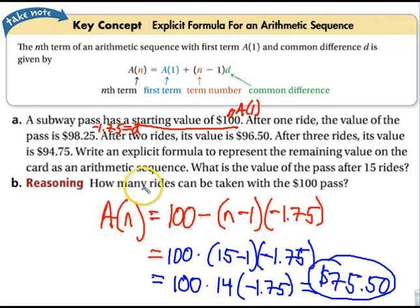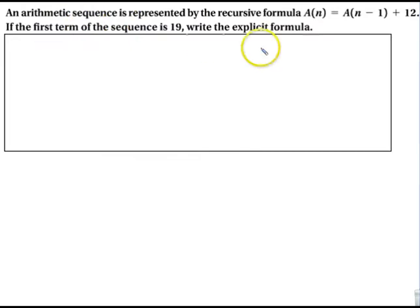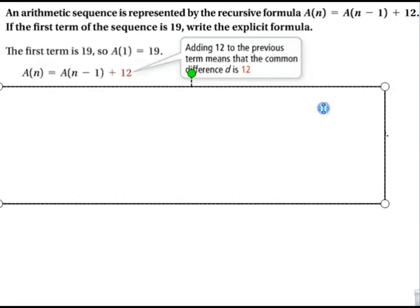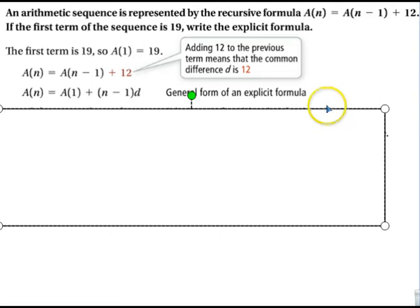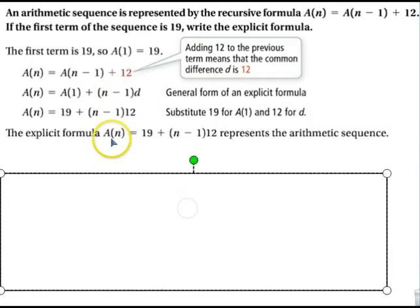I'm going to let you figure out how many rides can be taken with the $100 pass. I think that's a good thing for you to figure out. And then the last one. Here's the recursive formula. We know that the first sequence is this, so we're going to write the explicit. So the first term is that one. So we want to figure out this is the d, so therefore I need to know d and I need to know a sub 1 or a of 1. So a of n is equal to a of 1 plus n minus 1 times d. We plug them in. There's the explicit formula. A of n is equal to 19 plus n minus 1 times 12. We see the plus sign. It's a positive 12, so that's why it's increasing and whatnot.